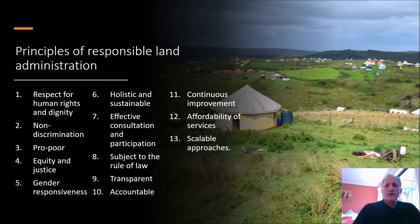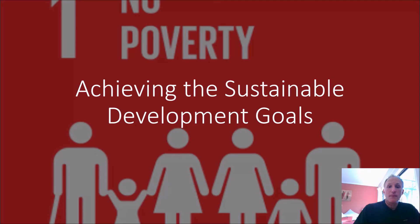We will touch on many of these principles in the videos to come. The important points to remember are that by adhering to the principles of responsible governance, effective land administration can contribute to the achievement of many of the sustainable development goals. For example, Goal 1, Target 1.4 requires the release and publication of information on the proportion of the adult population with secure land rights and legally recognized documentation of such, and of those who perceive their rights to land to be secure. With responsible land administration, this information should be available.